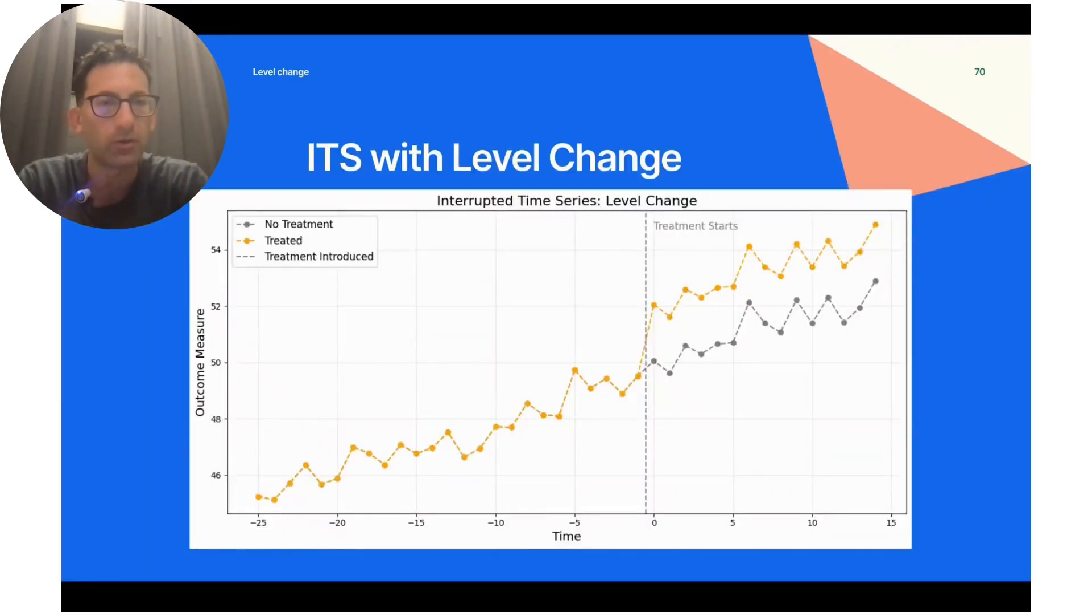When you model the interrupted time series, it's important to think about how the treatment will affect the population. In one example, it could cause just a level shift.